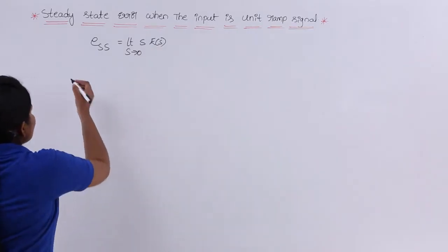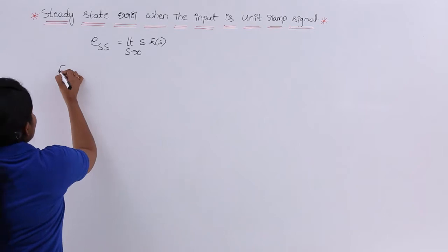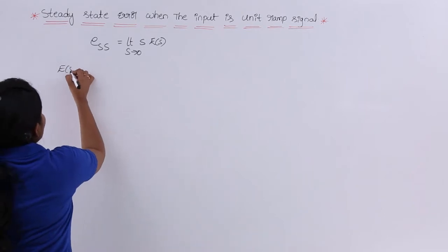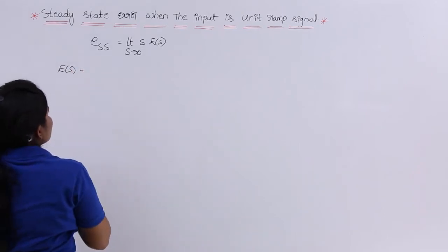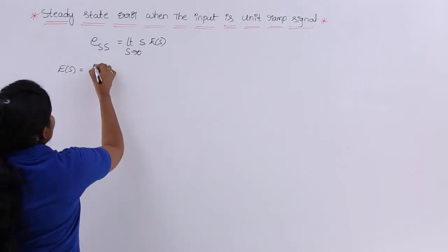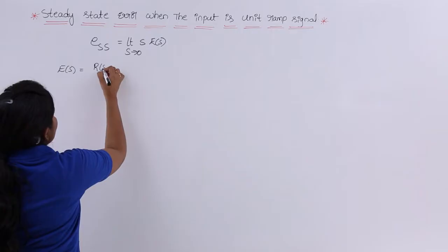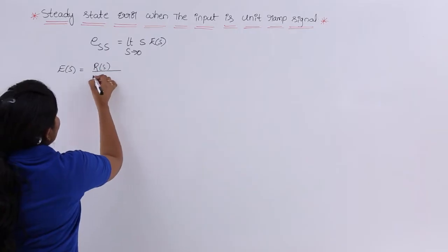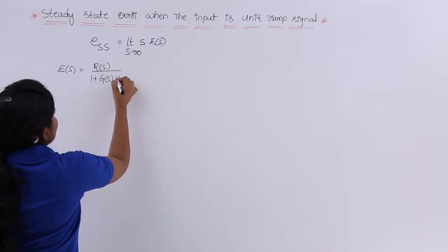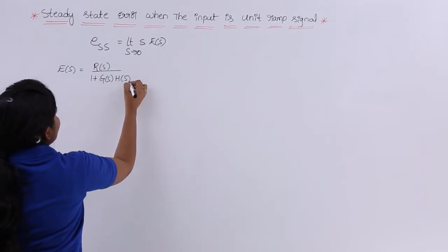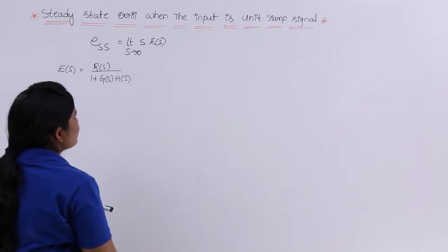We also have the formula for E(S): E(S) is equivalent to R(S) divided by 1 plus G(S) into H(S). This is the formula for E(S).